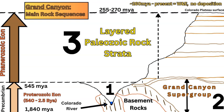The Grand Canyon Supergroup is a set of sedimentary rock layers that are angled and tilted. Then there's the third set, which is the most visible — especially from the rim or plateau surface looking into the Grand Canyon. This is the striking layered Paleozoic rock strata, extending all the way from the inner gorge up to the plateau surface, covering rocks formed in the Paleozoic era.